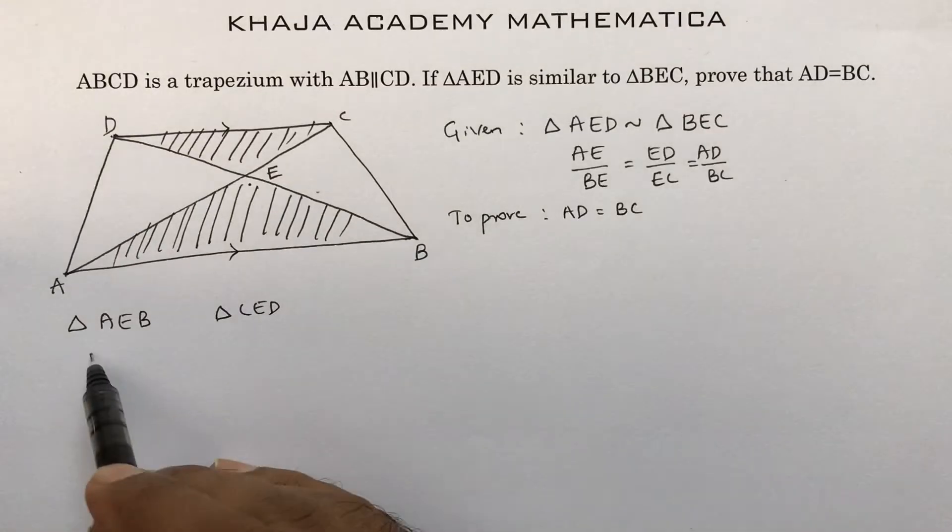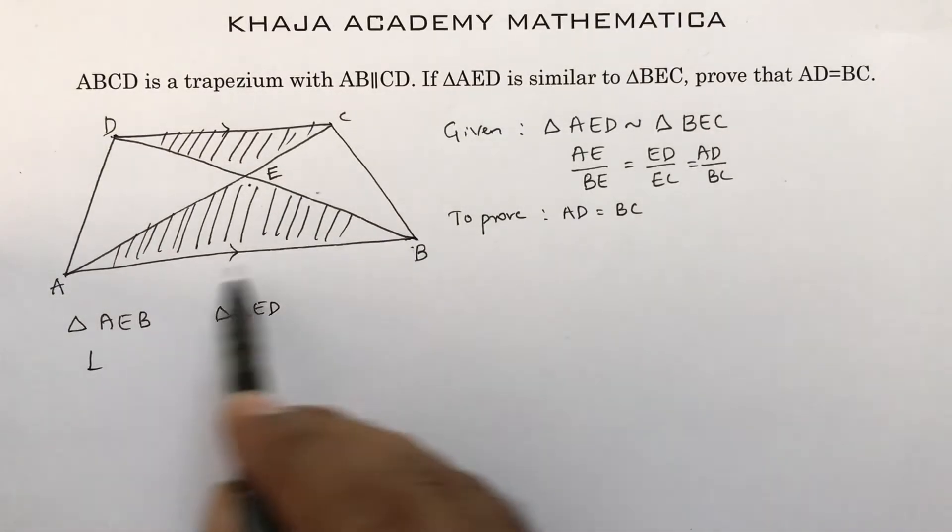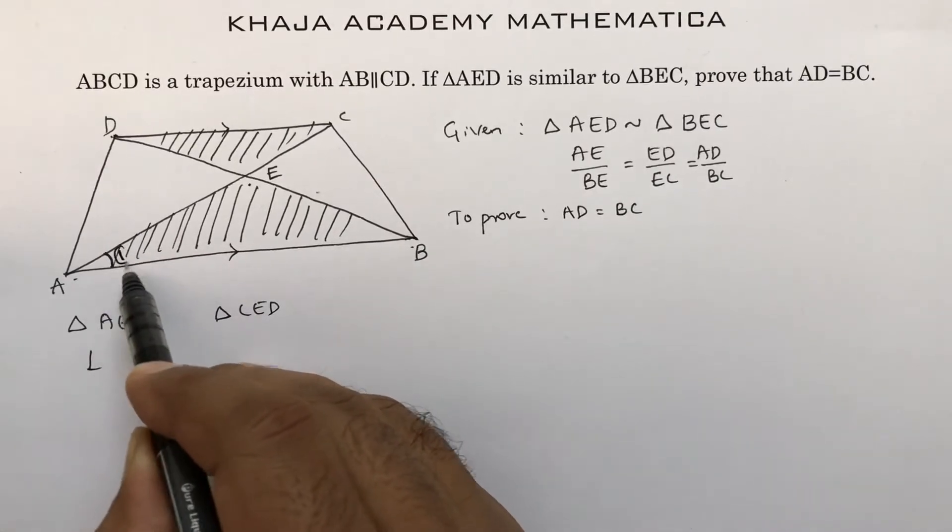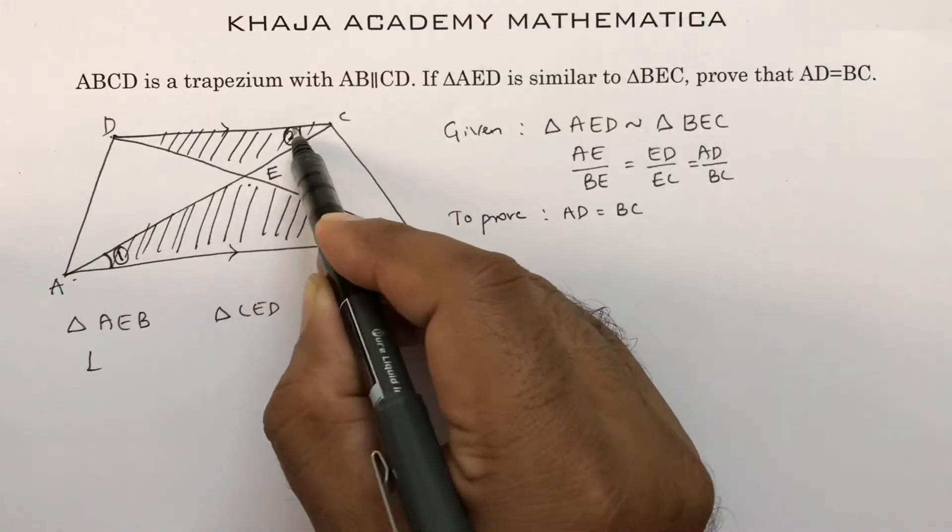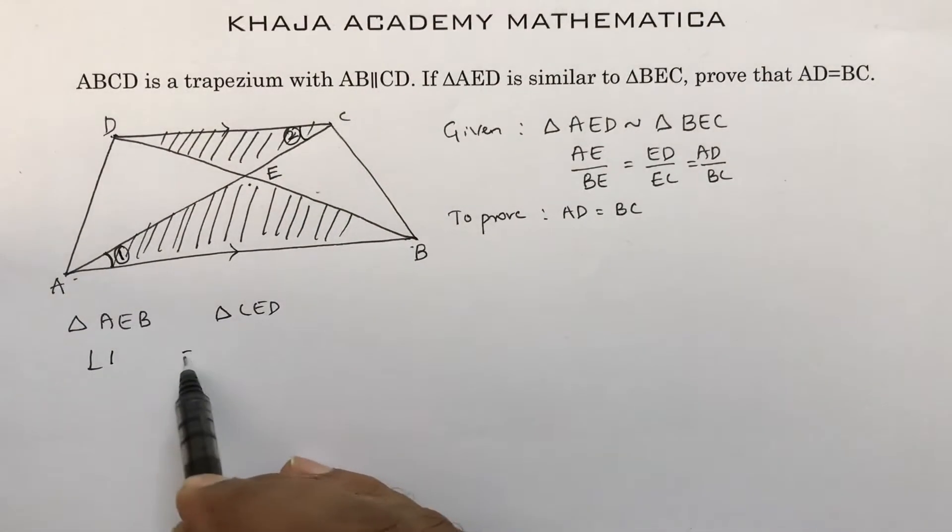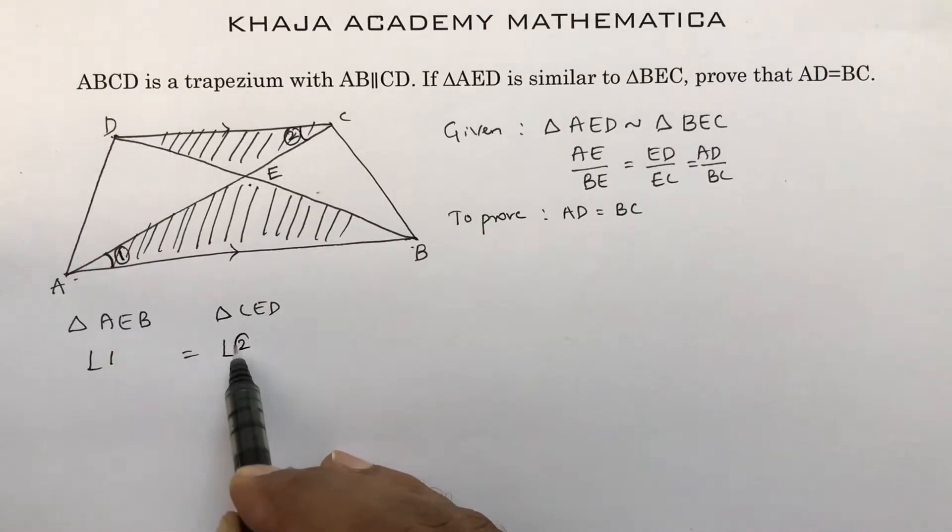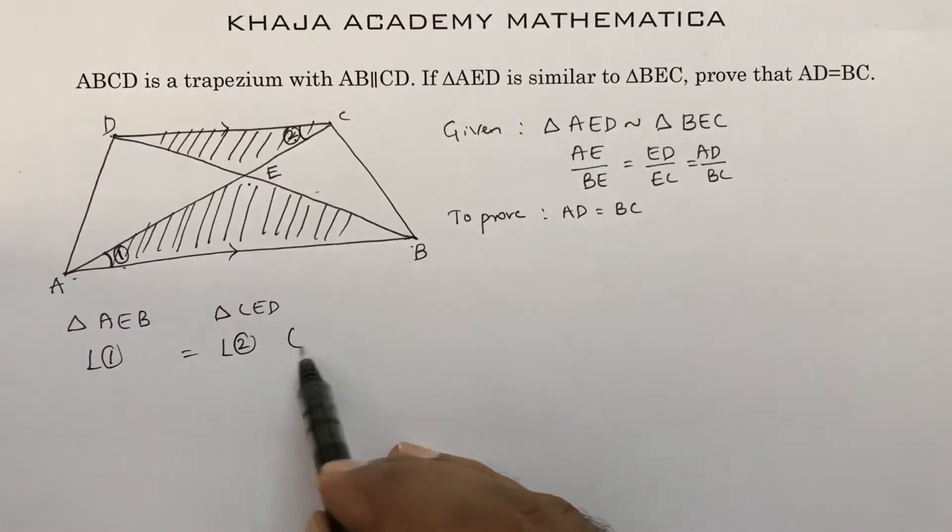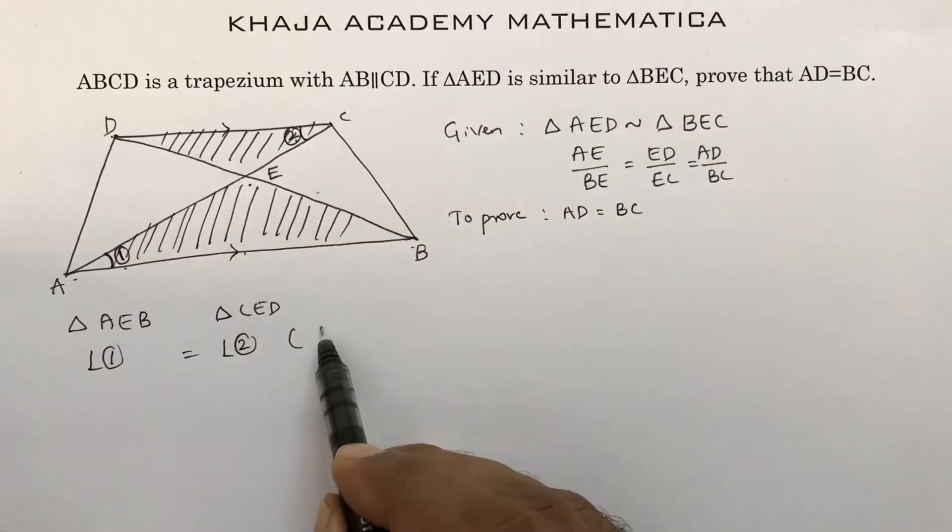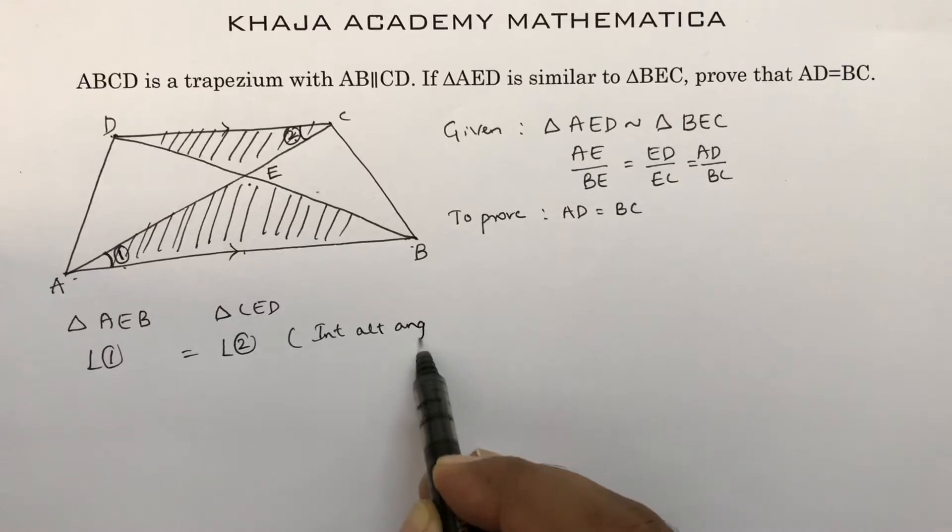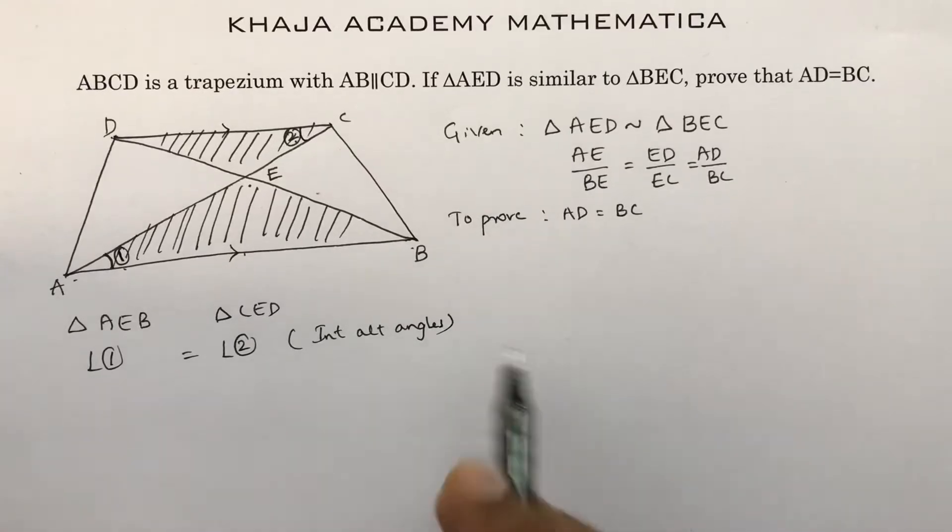So this angle we'll consider as 1 and this angle as 2. Angle 1 equals angle 2. Reason is, as these two lines are parallel, interior alternate angles.